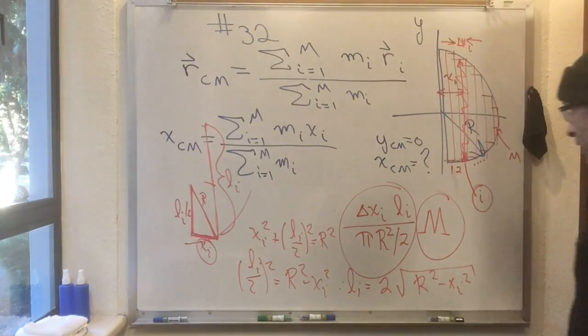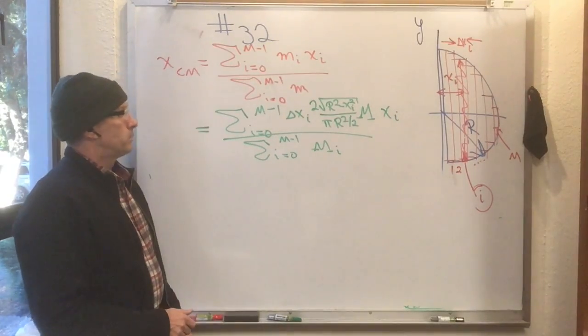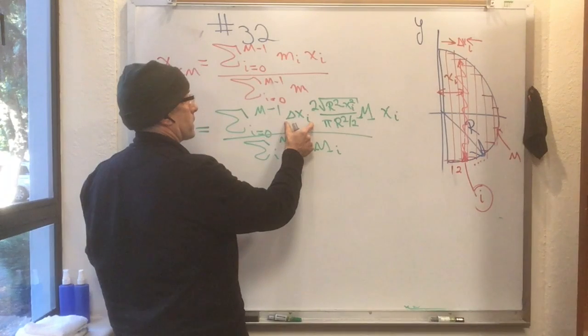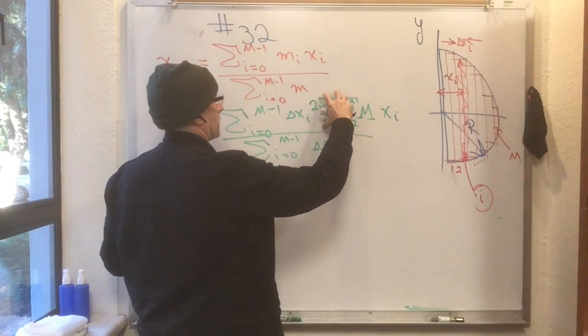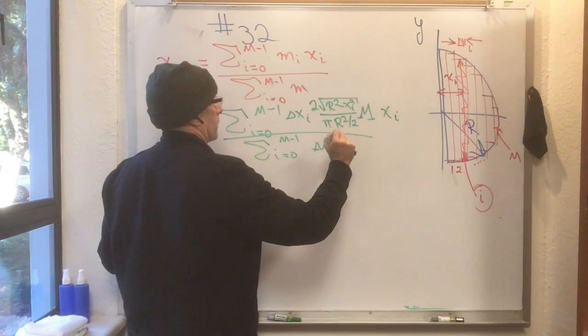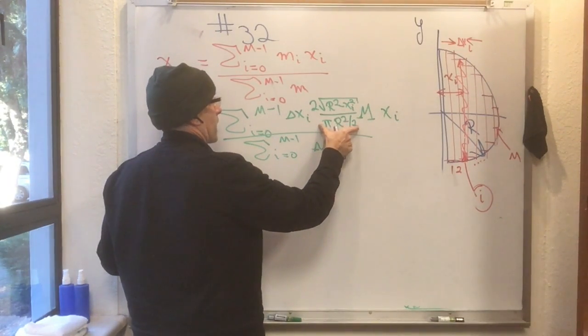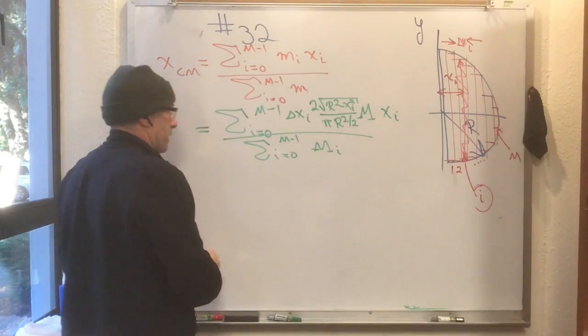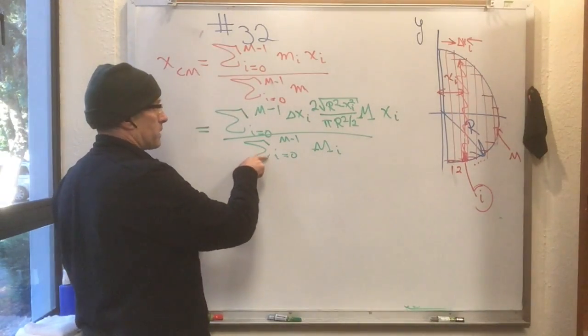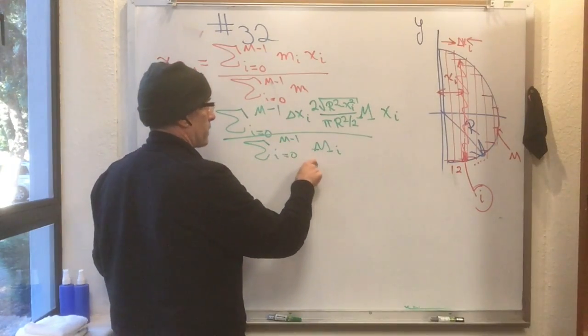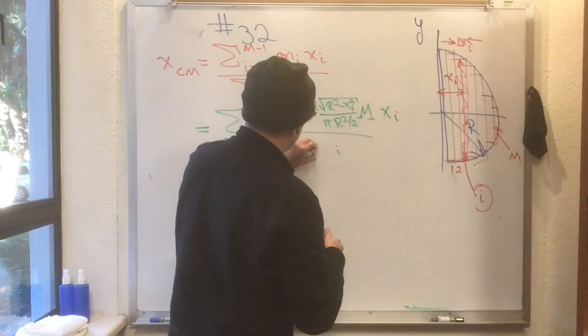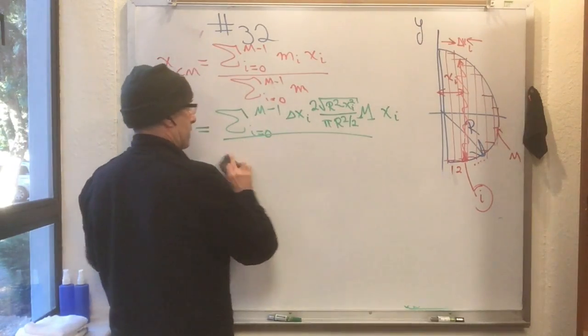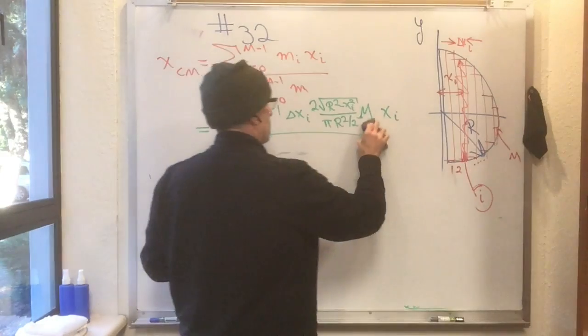So, now I even have a formula for l_i. So, I put everything that I knew that was down there up into this formula. There's the width of the i-th strip. There's the length of the i-th strip. There's the total area of the half plate. There's the total mass of the half plate. Now, one thing that's really nice, right off the bat here, is in the denominator, we have sum i equals 0 to m minus 1 of all the strips. The masses of all the strips. Which, of course, is the total mass of the half plate. So, that m cancels with that m.